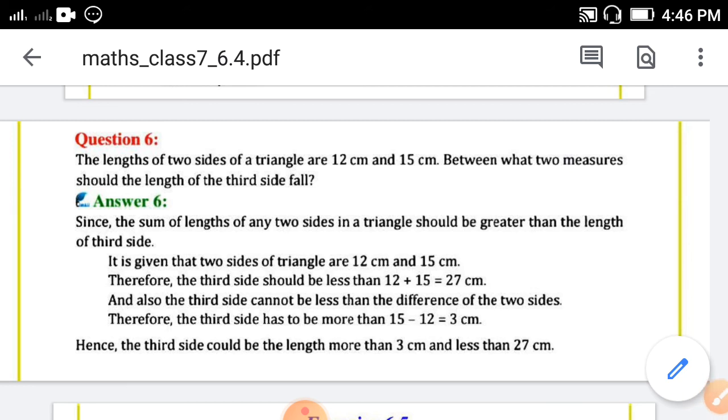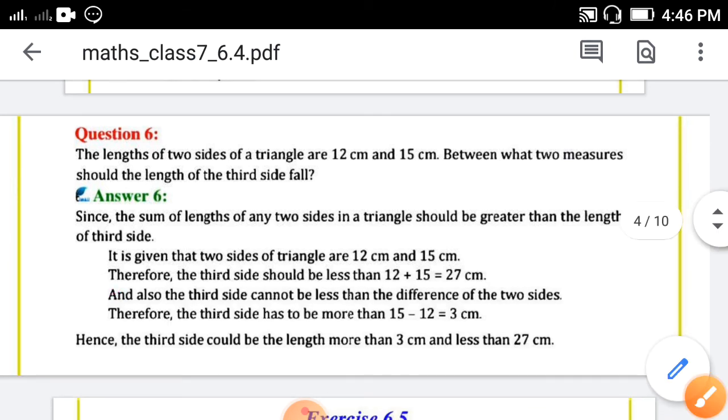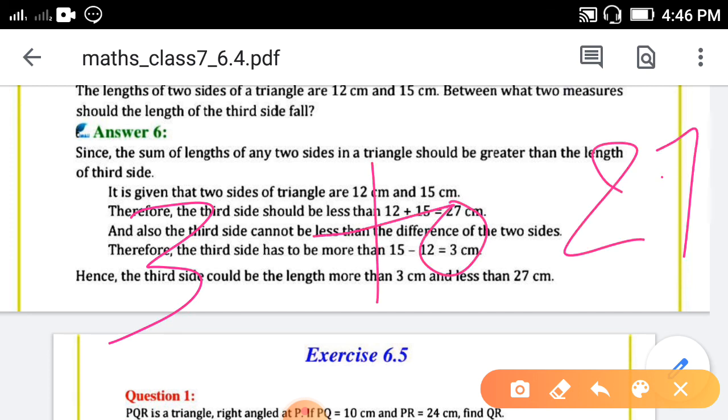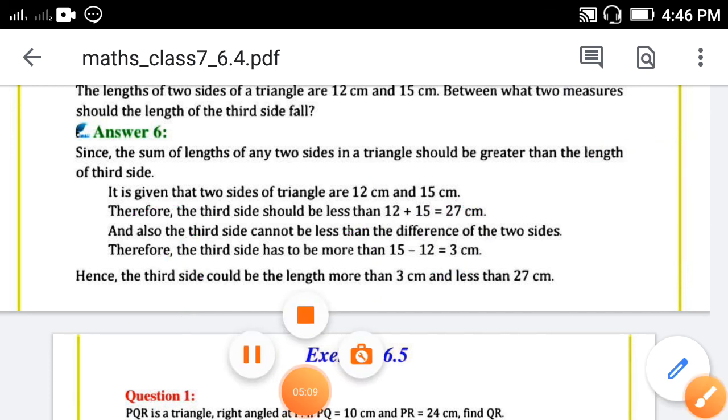And one more property: the third side cannot be less than the difference of two sides. So 15 minus 12, you will get 3. So it should not be less than 3 or greater than 27. So the third side could be the length more than 3 and less than 27. It means between 3 to 27.